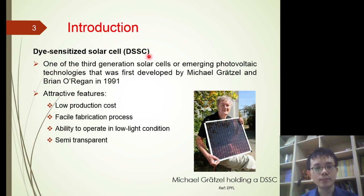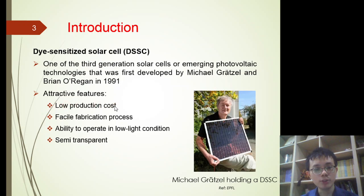Dye-Sensitized Solar Cells, or DSSCs, are one of the third-generation solar cells — an emerging type of photovoltaic technology that was first developed by Michael Grätzel and Brian O'Regan in 1991. DSSCs have attracted immense research interest since their inception due to various attractive features such as low production cost, facile fabrication process, ability to operate in low light conditions, as well as being semi-transparent.